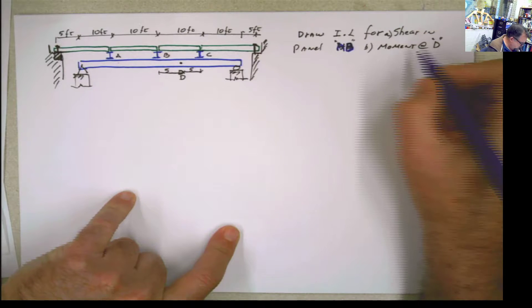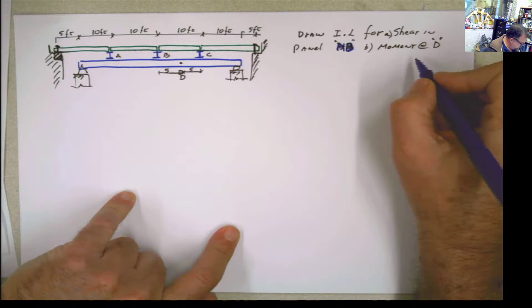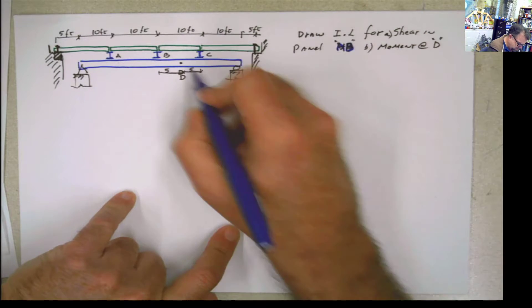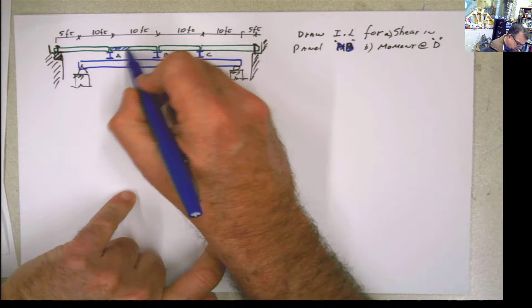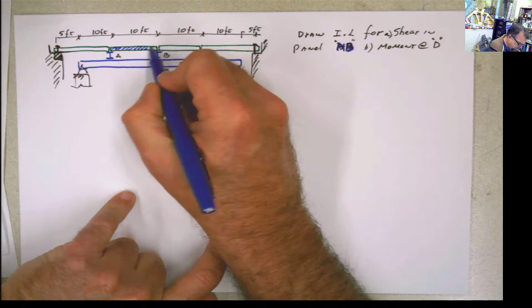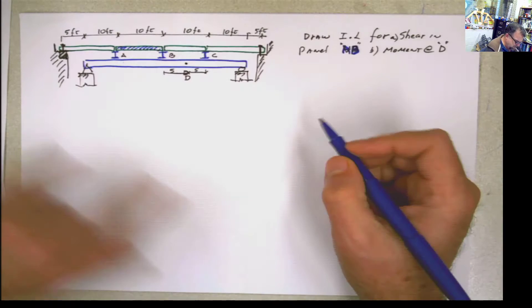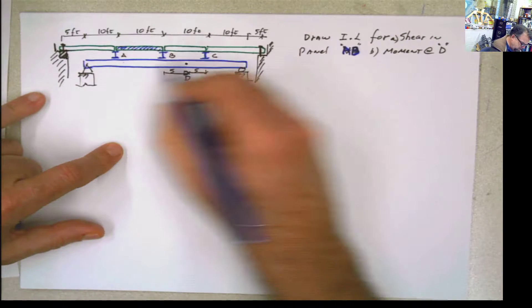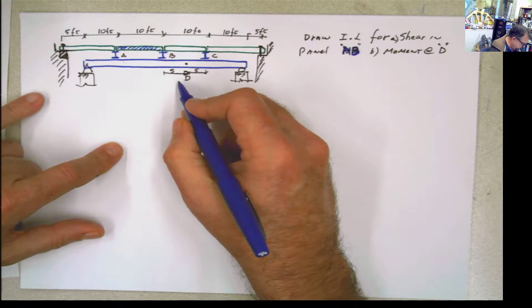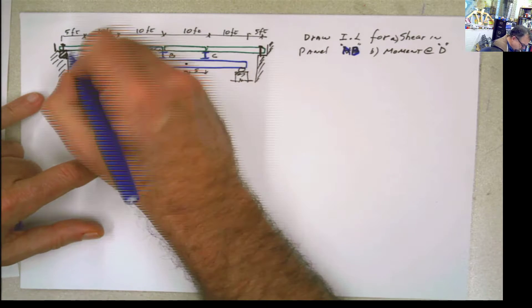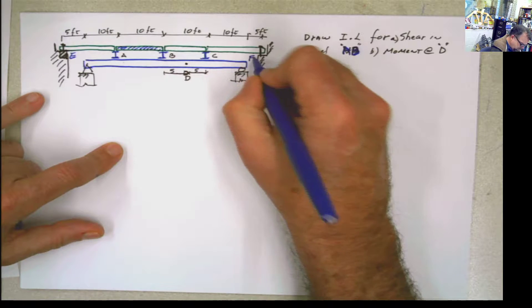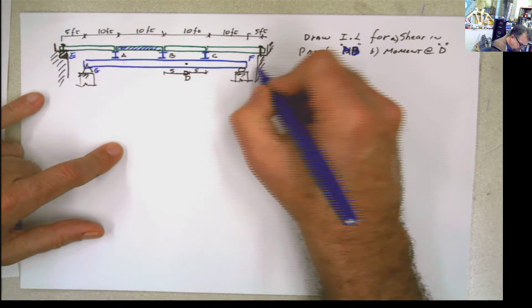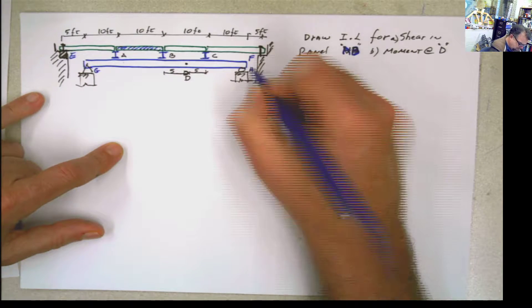So the moment here, and we need the shear at this panel. This is AB, C, D, E, F, G, H.